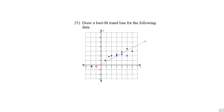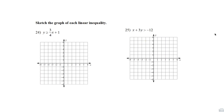Someone else might try a different line — like that blue one — and that's fine. You could even do a black one that's a little less steep but starts higher. There are different options, but the line should try to follow the data.